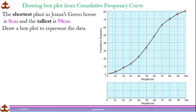The shortest plant in Joanna's greenhouse is 8 cm and the tallest is 94 cm. We've been given the cumulative frequency curve and we need to draw a box plot from it. As discussed in the earlier lesson, a box plot uses five values: the smallest, the biggest, the lower quartile, the median, and the upper quartile. We already know the smallest and biggest, so we need to estimate the median, lower quartile, and upper quartile from the graph.